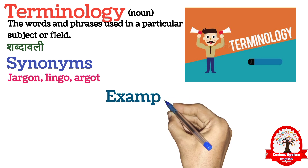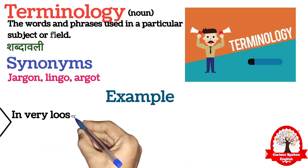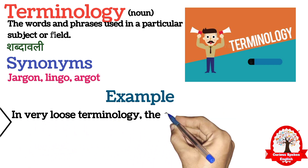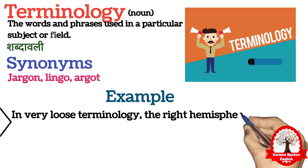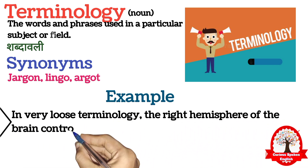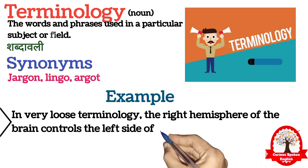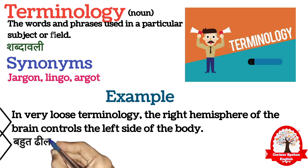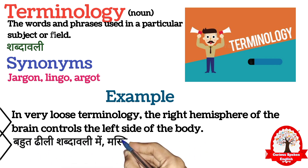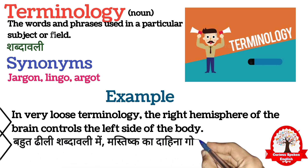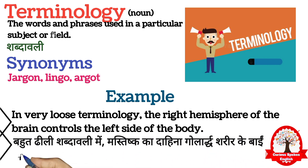Terminology ko lekar examples se sentence mein achha se samaj lete hai. In very loose terminology, the right hemisphere of the brain controls the left side of the body. Behut dhili shabdaavali mein, mastishka ka daahina golaard shariir ke baayi aur ko niyantrit karta hai.